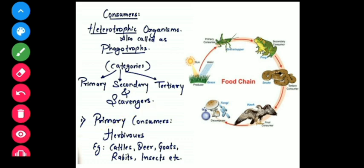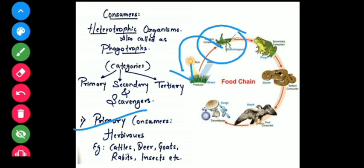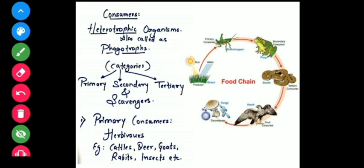Primary consumers are the first group of consumers, exclusively called herbivorous animals. They directly depend on the producers. Very common examples of primary consumers are cattle, deer, goats, rabbit, and insects — depending on the food chain in different ecosystems. They are herbivores, and they are the first group of consumers, next to the producers.